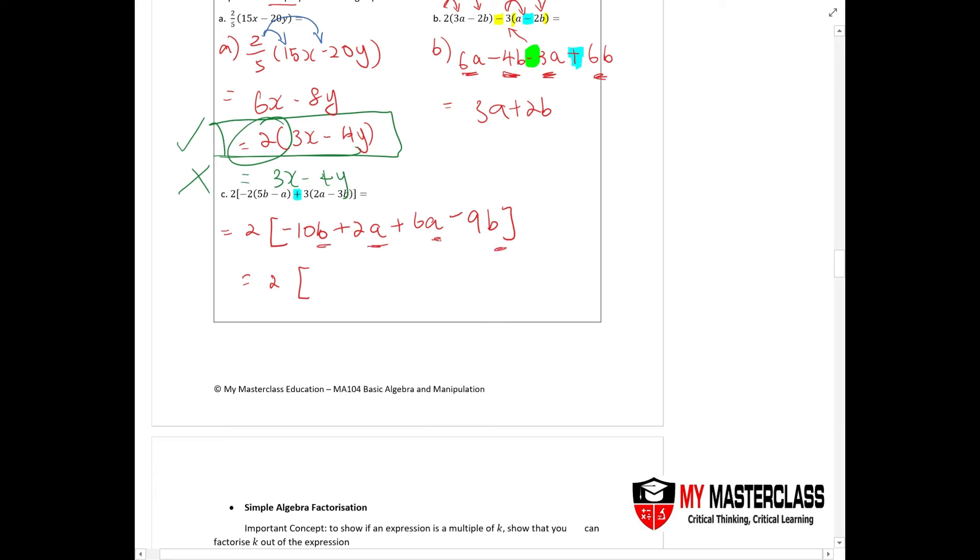So therefore, once you combine the like terms - like terms meaning to say those with the b's and b's go together, those with the a's and a's will go together - so therefore you would have -19b plus 8a. And now then you expand the 2 inside, so you have -38b plus 16a.